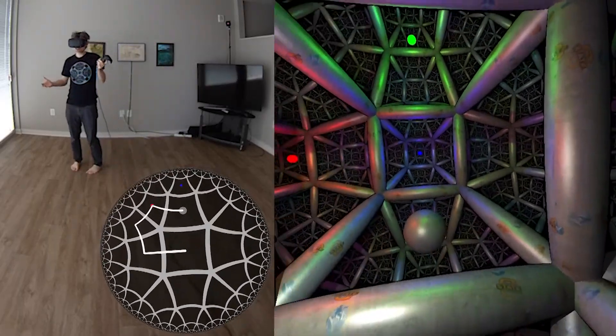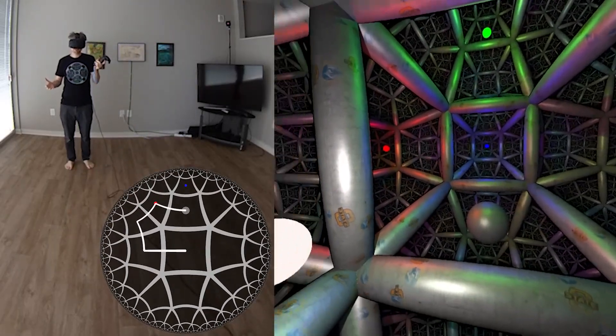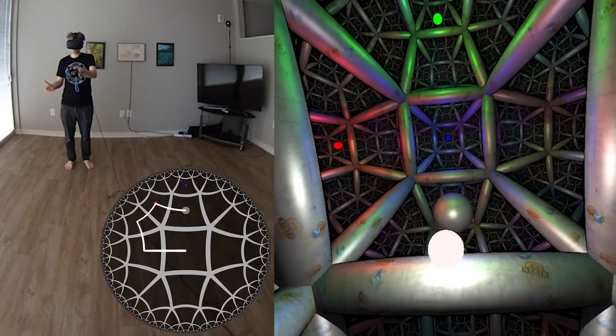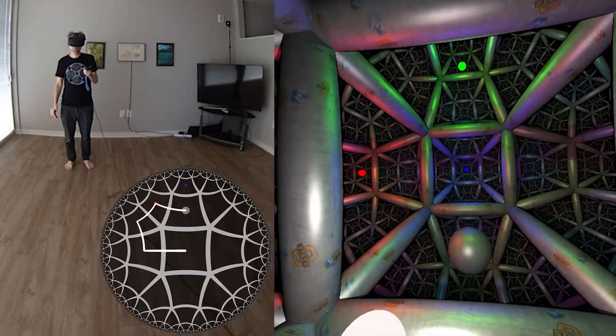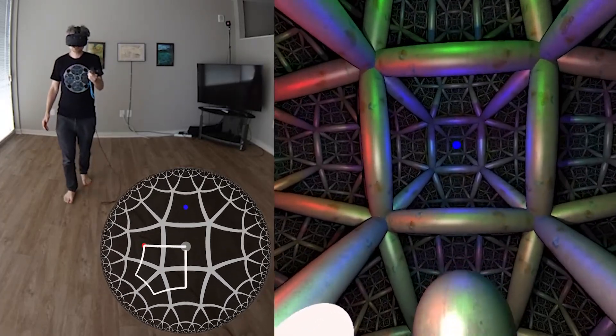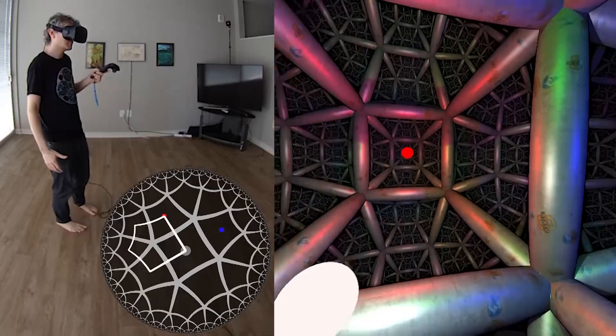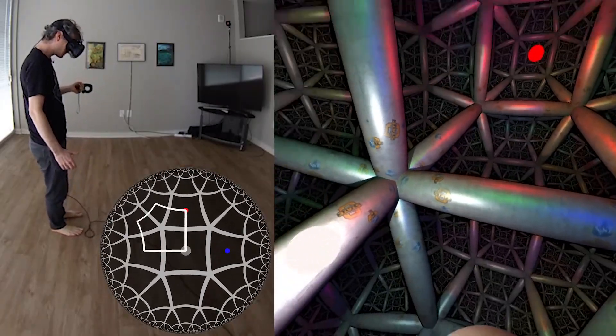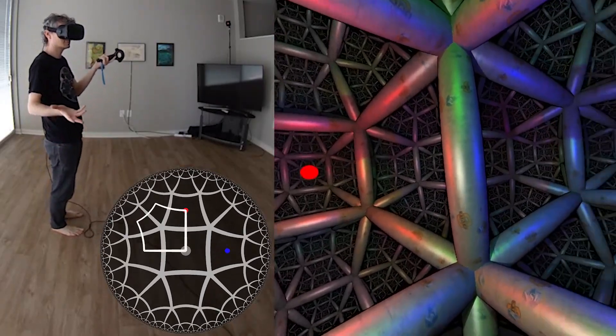So I'm now back where I started in the real world, but you can see that where I started in the virtual world is one cube further in. There's the sphere and there's the red light there. So rather than walking around the sides of a square to get back to where I started, I have to walk around the sides of a right-angled pentagon.